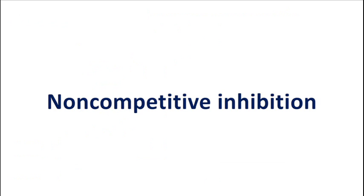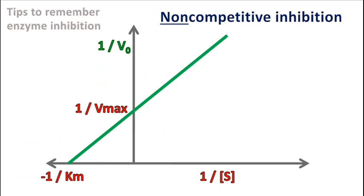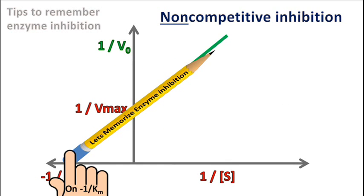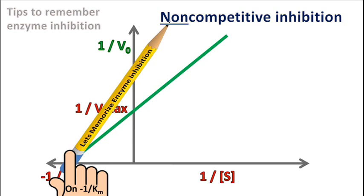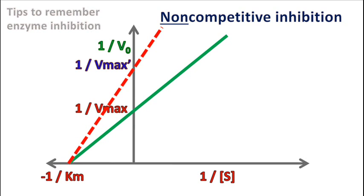For non-competitive inhibition, hold the pencil at -1/KM and rotate the pencil in the anti-clockwise direction. This gives you the graph of non-competitive inhibition. In this case, the value of 1/Vmax has changed, while the value of -1/KM remains the same.